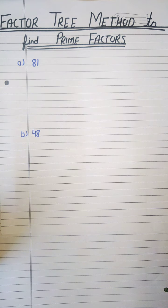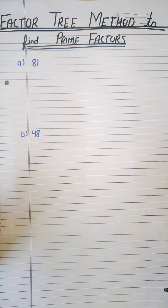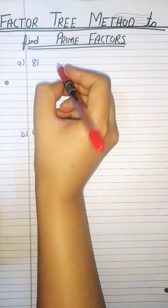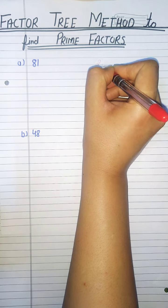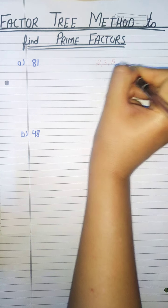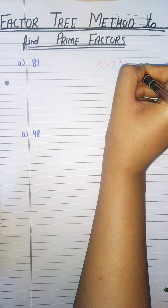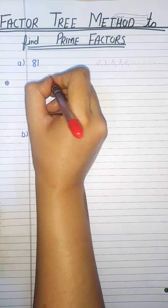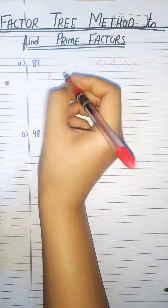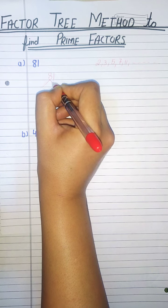Hello everyone, today we will do the factor tree method to find prime factors. Let us take an example: 81. What are prime numbers? 2, 3, 5, 7, 11, and so on. First we will write 81, then put two lines.